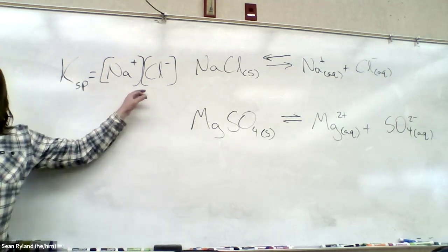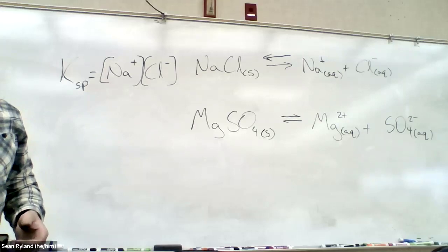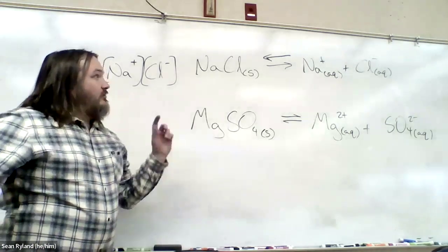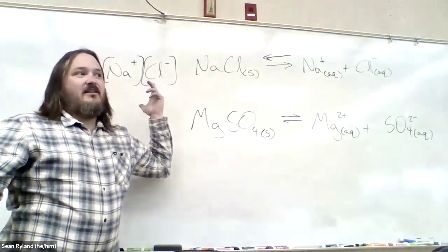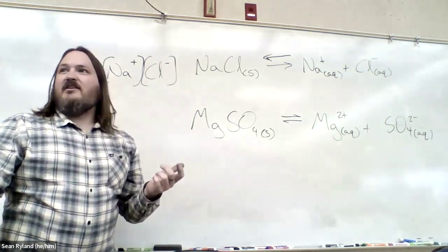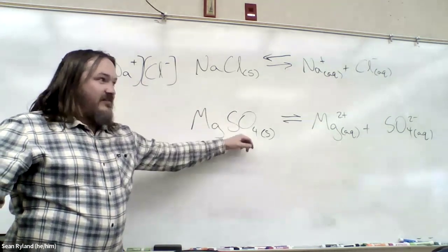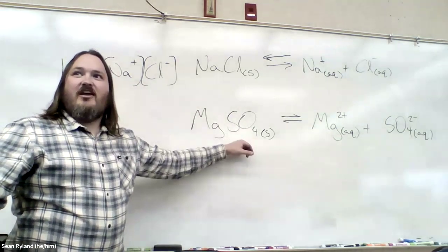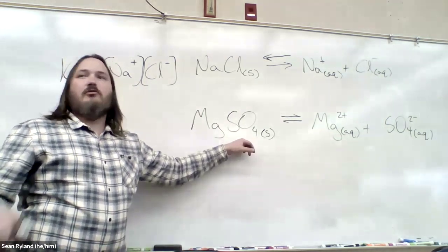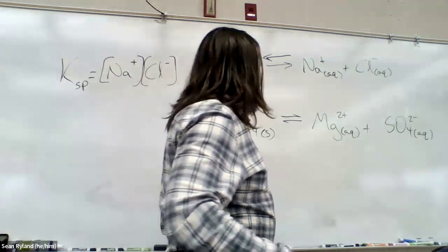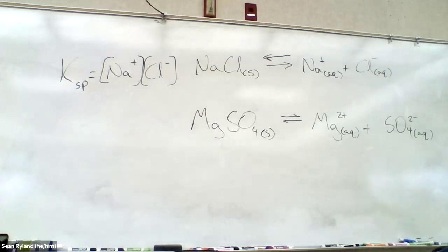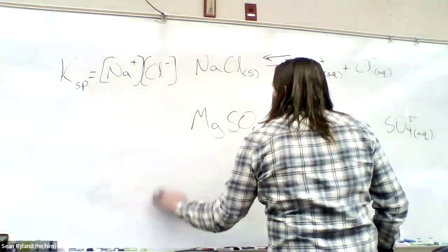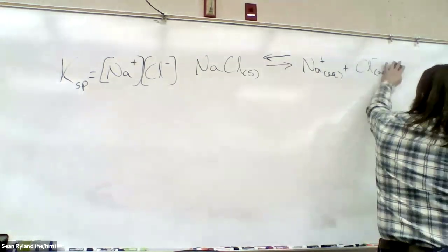Ksp only makes a real difference if your tap water already has some of those ions in it. Our tap water has some magnesium in it, for instance, so tap water won't have the same solubility for magnesium sulfate as deionized water. In general, if you look up a table, it means DI water. Unless your tap water has sucrose in it, it's not going to affect sucrose solubility.